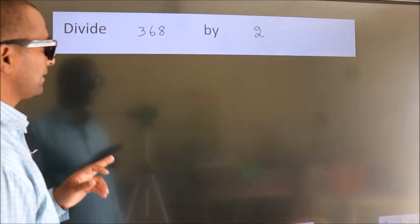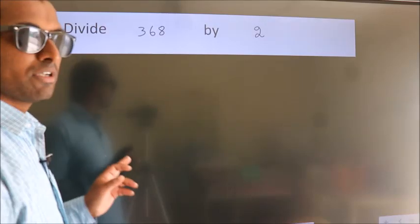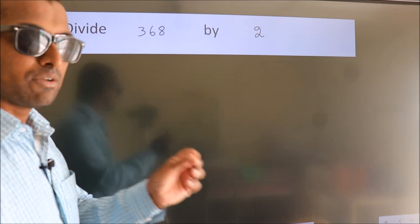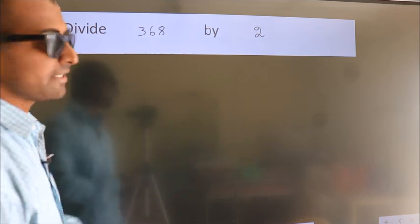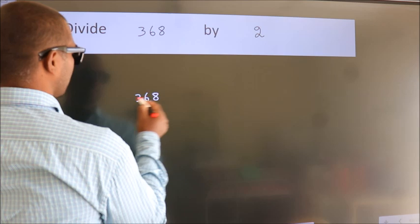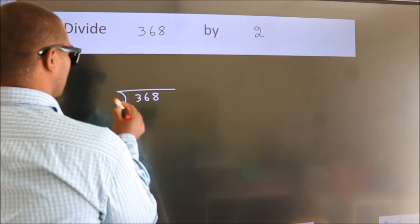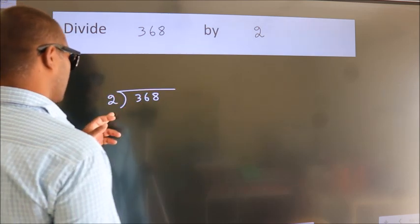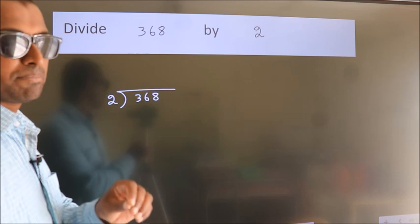Divide 368 by 2. To do this division, we should frame it in this way. 368 here, 2 here. This is your step 1.